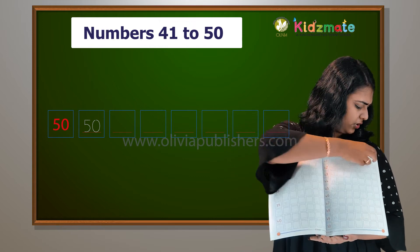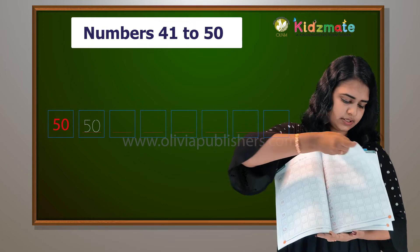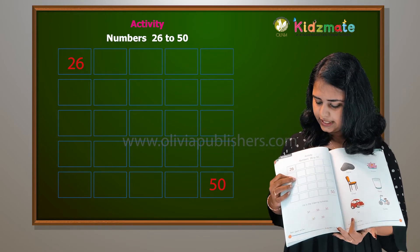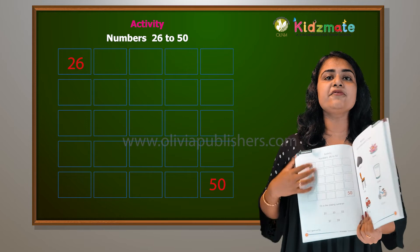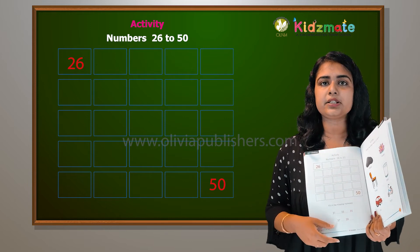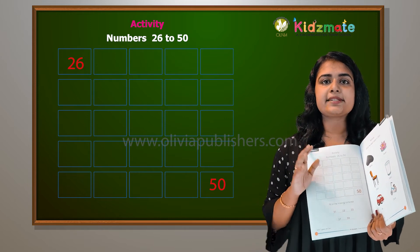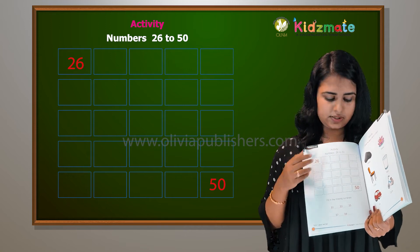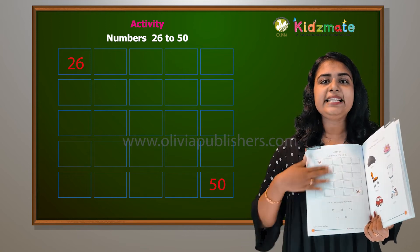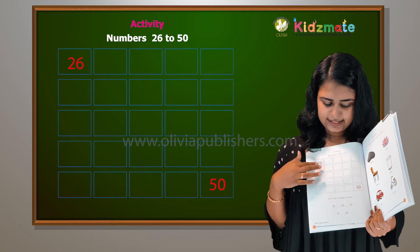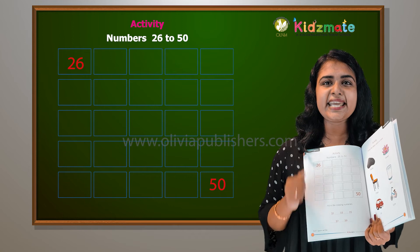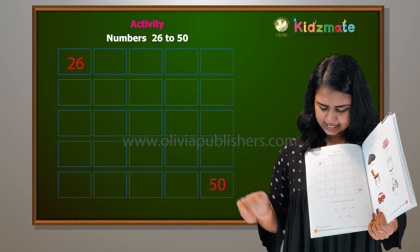All of you turn to your next page. Activity one — numbers 26 to 50. You have got numbers and scrolls on your list. So 26 to 50, we will now fill it in. Are you all ready? Yes!